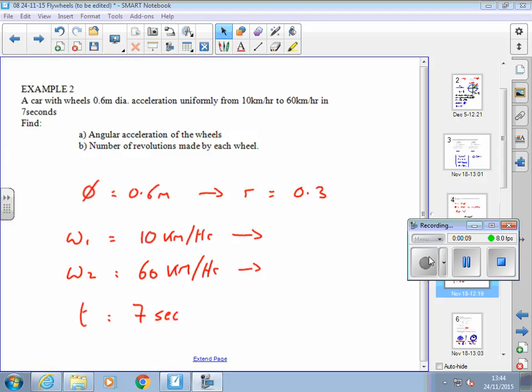We need to do something to get the angular velocity in the right units. Because it's in kilometres per hour at the moment. So, what do we do?